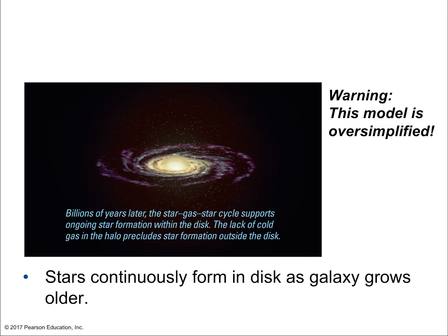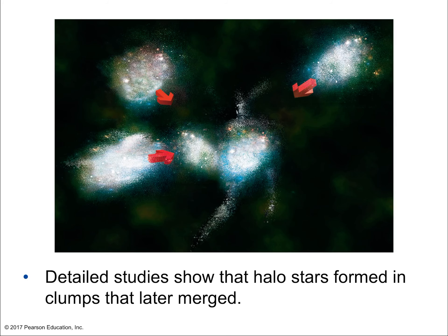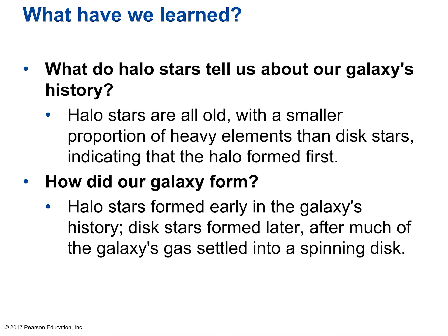Billions of years later, the star-gas-star cycle supports ongoing star formation within the disk, including in the spiral arms, while the halo stars remain old stars slowly becoming white dwarfs. Detailed studies show that halo stars formed in clumps that later merged, which is why we have globular clusters. In summary: halo stars are all old with a smaller proportion of heavy elements compared to disk stars, indicating the halo formed first, while disk stars formed later after the galaxy's gas had settled into the spinning disk.